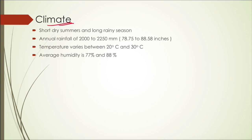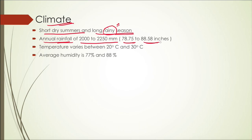What kind of climate do tropical rainforests need to grow? They have very short summers and a very long, rainy season. Annual rainfall in this region is around 2000 to 2250 millimeters, which is approximately 78.75 to 88.58 inches — that is the average annual rainfall. The temperature is neither too hot nor too cold, usually between 20°C to 30°C, and average humidity is very high, between 77% to 88%.